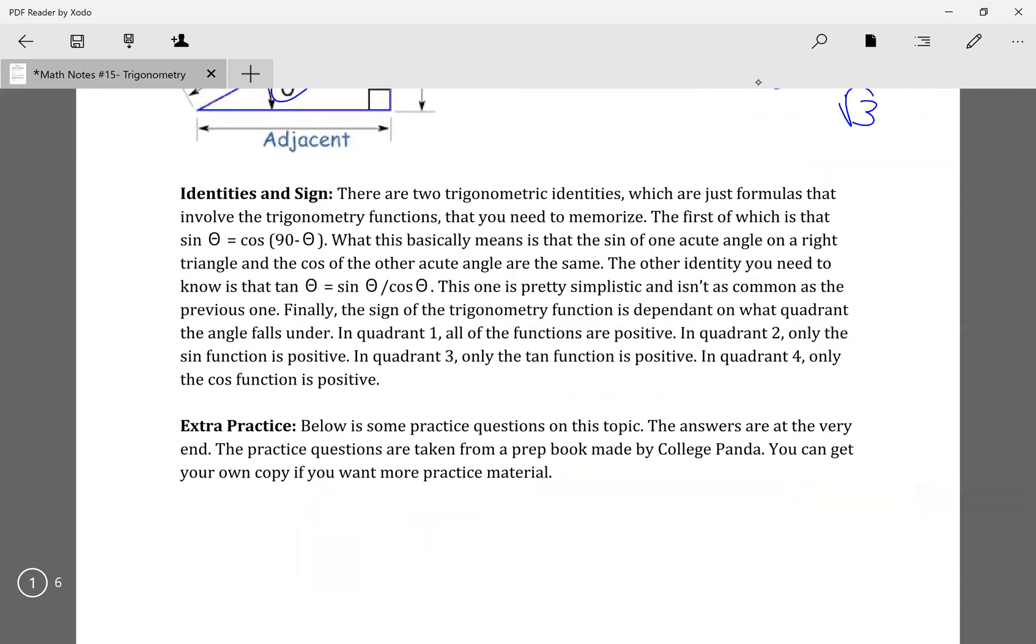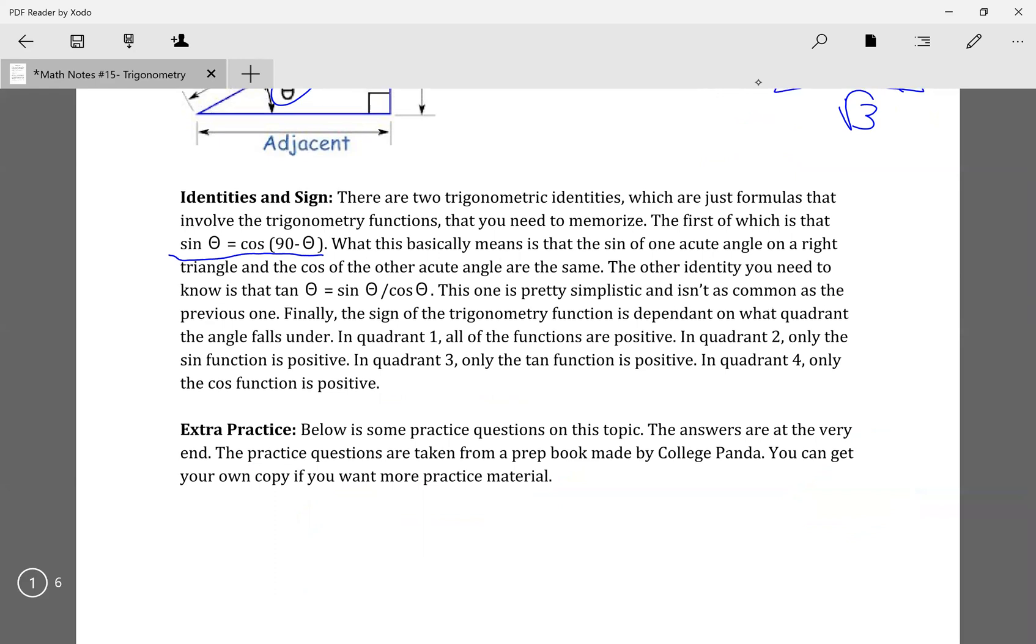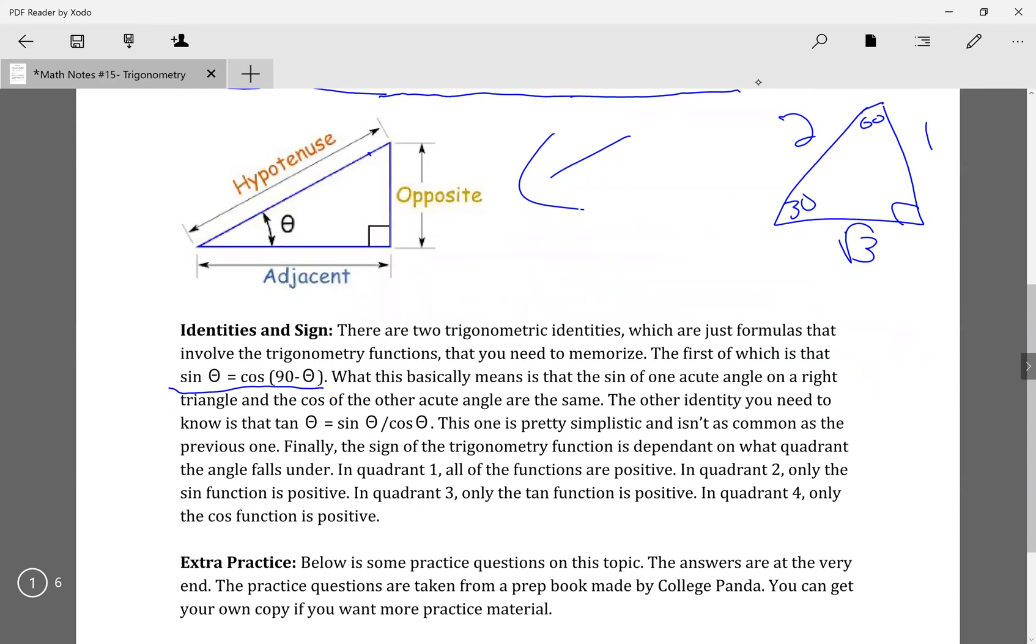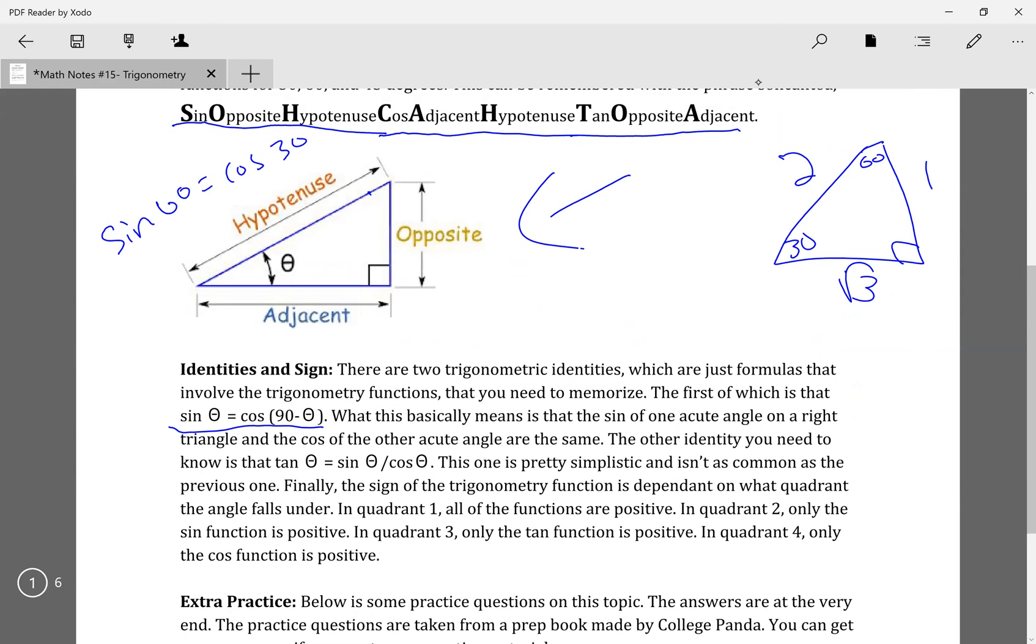There are also trig identities, which are basically special formulas that you can use with trig. One of them is sine theta equals cosine 90 minus theta. This basically just means that if you have the sine of this angle, the sine of this angle right here is the same as the cosine of this angle right here. Let's call this y. So sine theta is the same as cosine y. If you have sine of 60, it will be equal to cosine 30, which you can see right here, because sine 60 is root 3 over 2, and cosine 30 is root 3 over 2.